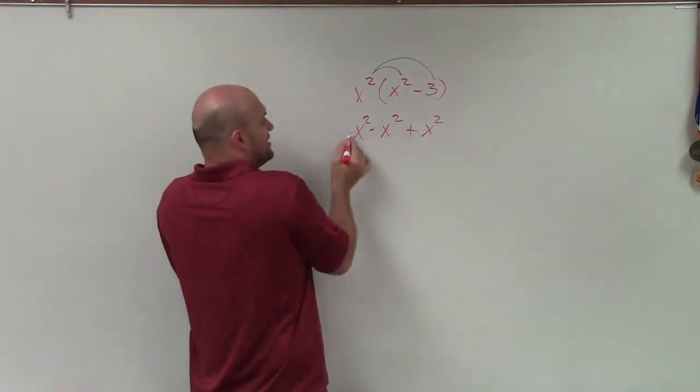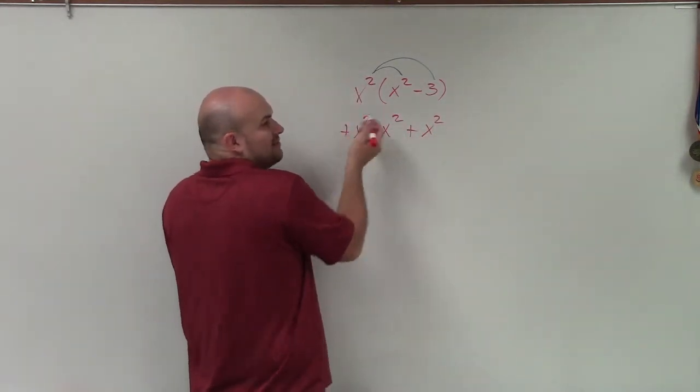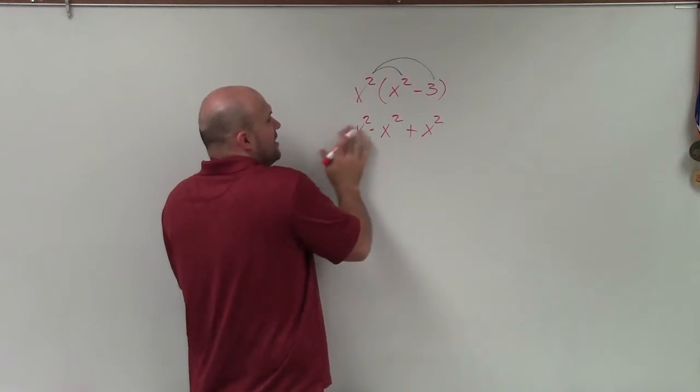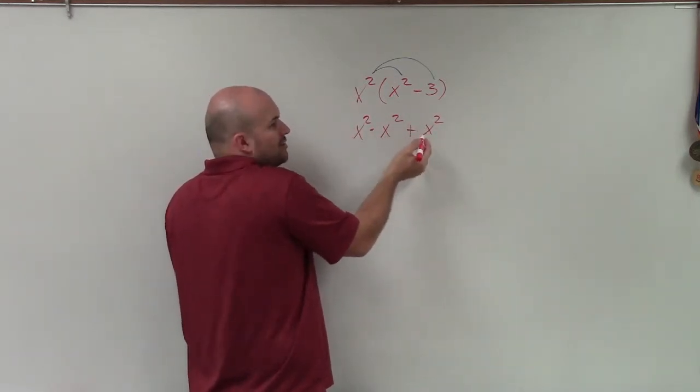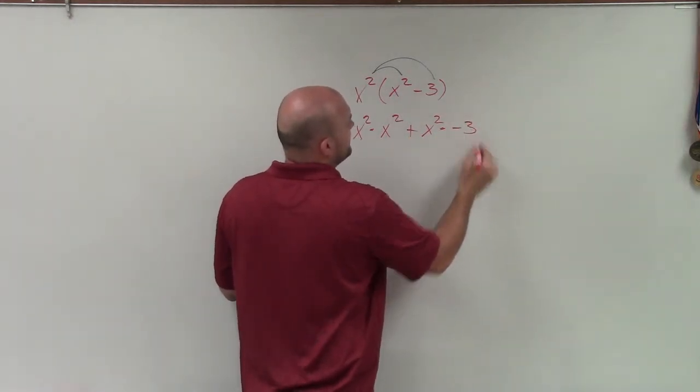Because if I didn't, here we don't need to write the positive, which shows it's positive. But when we're writing it between two terms, we've got to make sure we write that. Otherwise, there would be no operation there times negative 3.